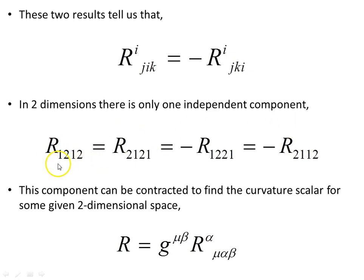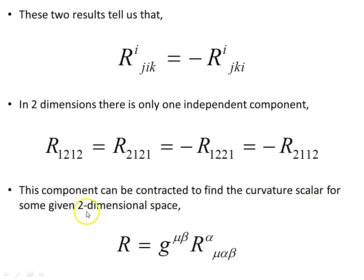In two dimensions there is only one independent component, since for each index you have a choice of only two values, and the constraints eliminate all but one. Using the symmetry relations it can be rewritten in different orders, some with a negative sign, but there is only one independent component. This component can be contracted — on the first and third indices, then multiplied by the inverse metric and summed over mu and beta — to find the Ricci scalar, the curvature scalar for the given two-dimensional space, as seen in the previous video on applications of the Riemann tensor.